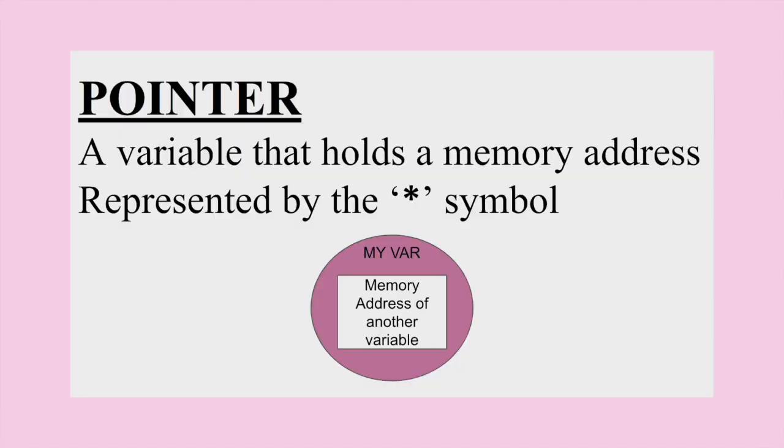Okay so we're going to get started with defining what a pointer is. It is a variable that holds a memory address represented by the asterisk symbol. As you can see here I have my var as this pink bubble because it is your allocated memory that can store a value, and inside of it it's storing a memory address of another variable.